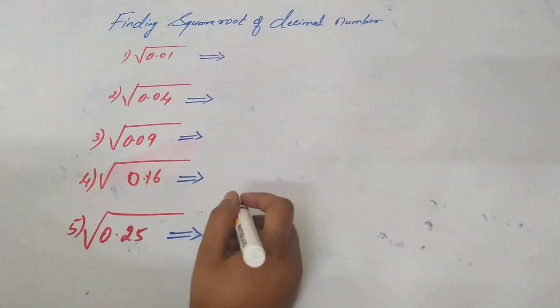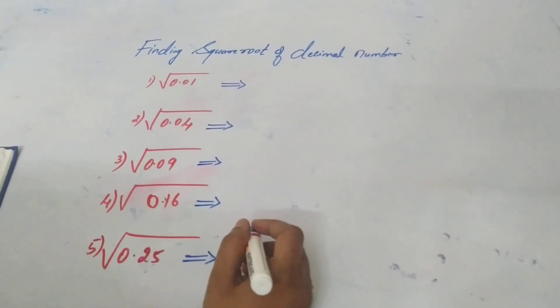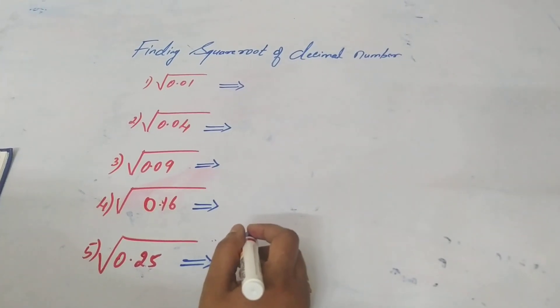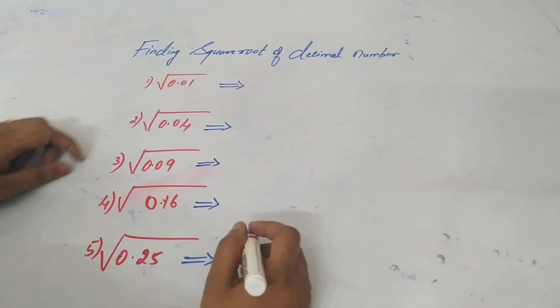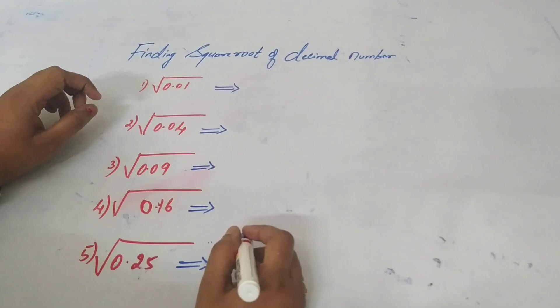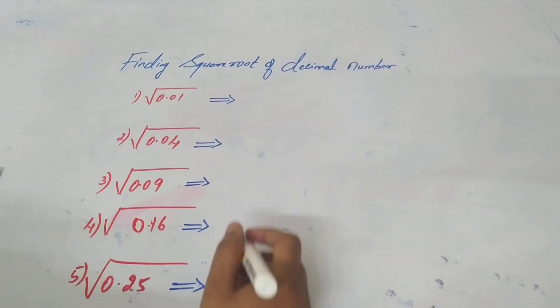Hi everyone, in this video we are going to learn finding the square root of decimal numbers. The first number is square root of 0.01.